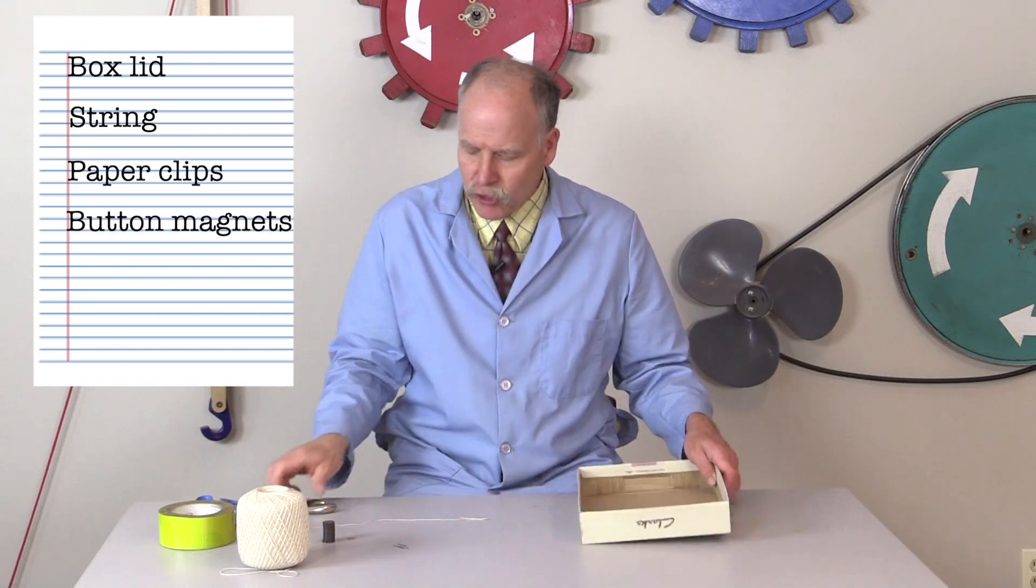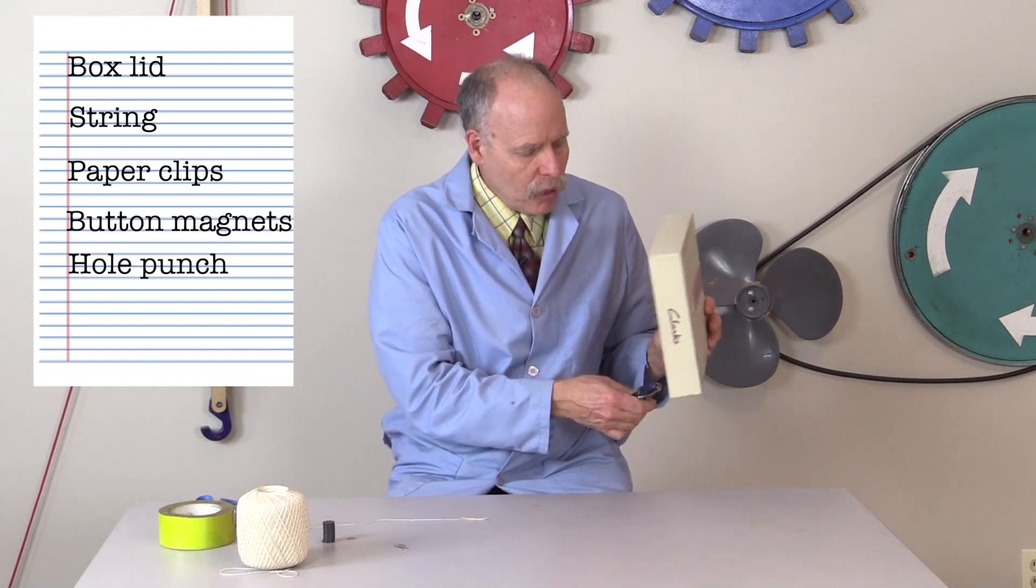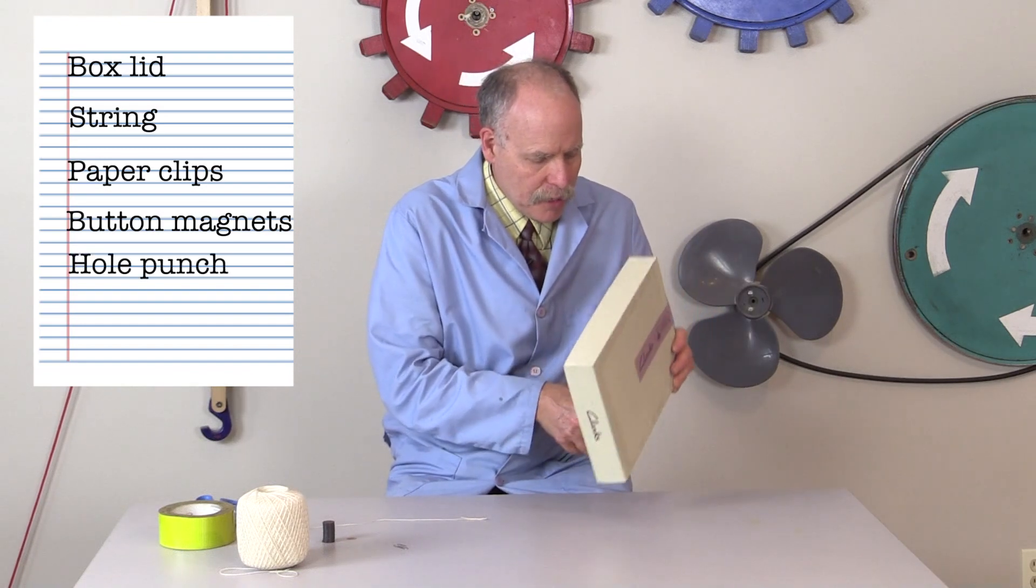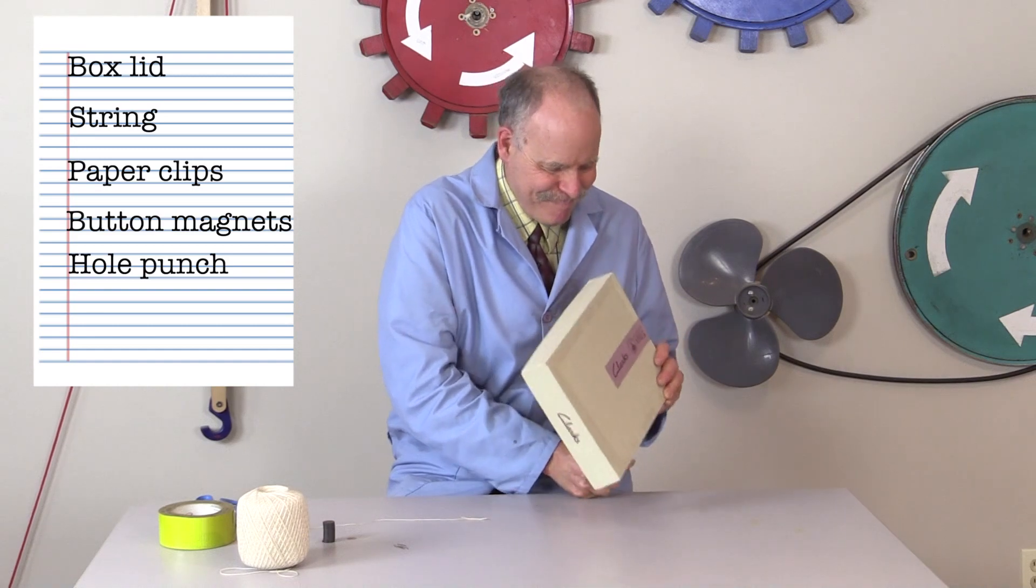First thing you're going to do is take a hole punch and punch a little hole at the bottom of this box lid like so.